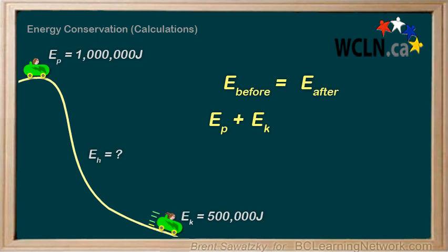And on the right, we have the energies after, or at the bottom of the hill. Let's call them E_P' for the potential energy at the bottom, and E_K' for the kinetic energy at the bottom. We use the apostrophe just to remind us that these are the energies after the ride down.